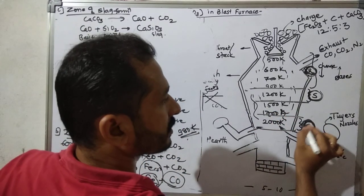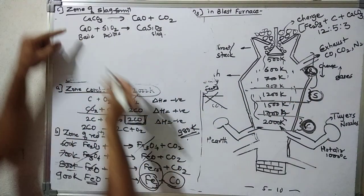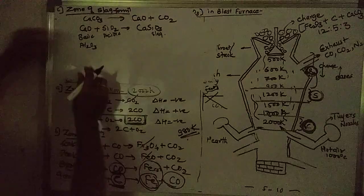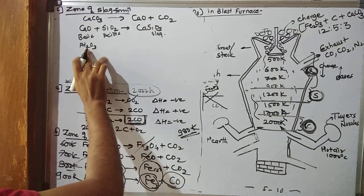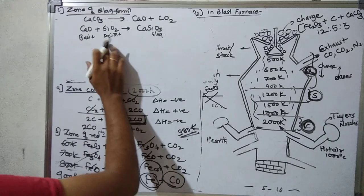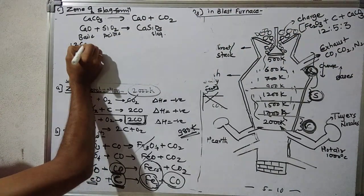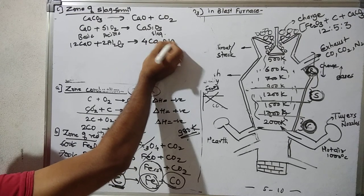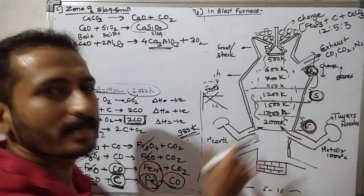Now there are other impurities. Alumina, Al2O3, also reacts. During the alumina case, alumina also forms calcium aluminate slag. The reaction is 12 CaO plus 2 Al2O3 to form 4 Ca3AlO3, calcium aluminate, plus 3 O2. This is also slag, calcium aluminate and calcium silicate. This is waste product. This slag is formed at 1200 to 1500 Kelvin temperature. So we have three zones completed: combustion, zone of reduction, and zone of slag formation.